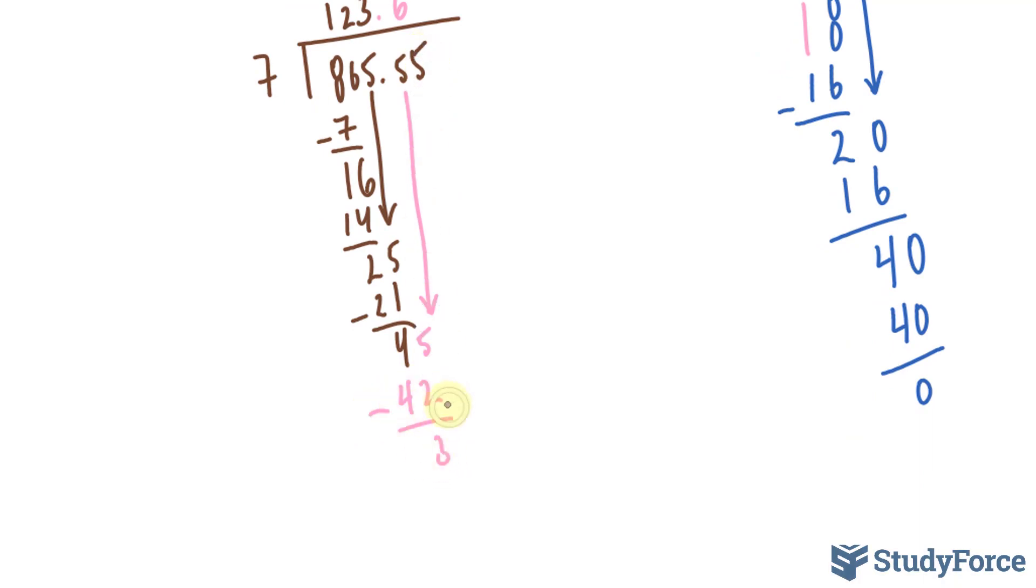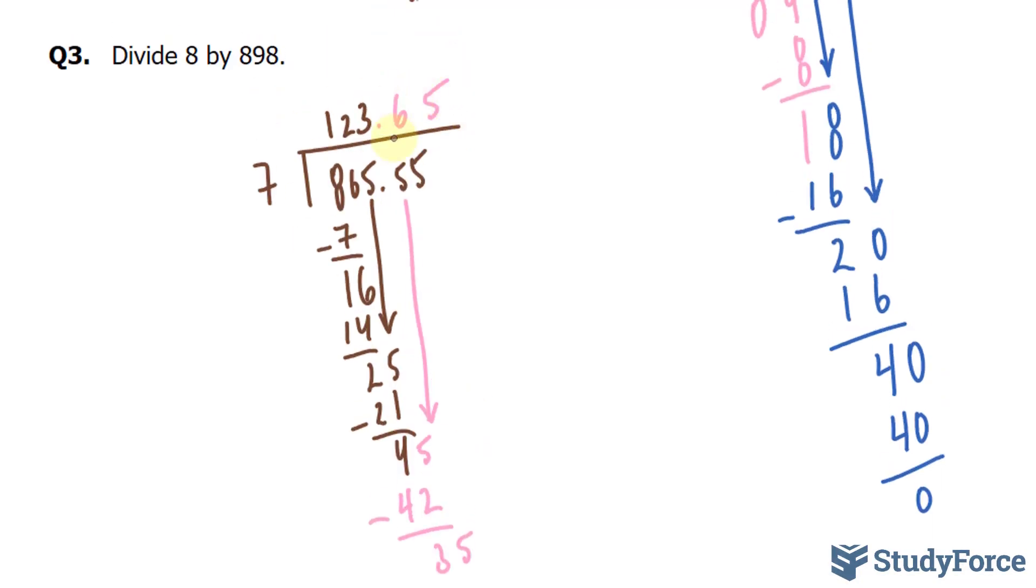And finally, we bring this 5 down. 7 fits into 35, 5 times perfectly. 5 times 7 is 35. That gives us a remainder of 0. And this right here represents our quotient, our answer.